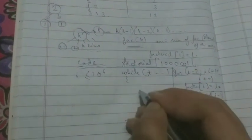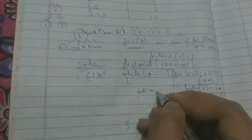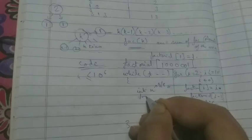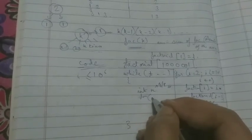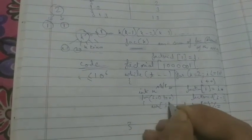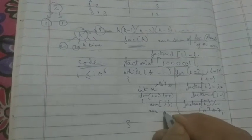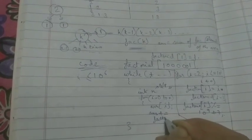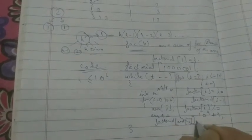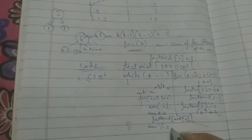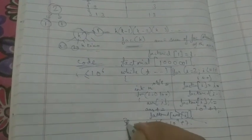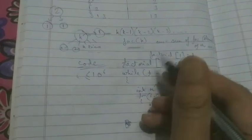Inside the while loop, take the input, run a loop from 0 to n, and for every a of i, answer plus equals factorial of a of i. And obviously, answer mod equals to 10 to the power 9 plus 7, and then print the answer.